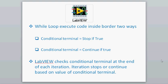This video is about the while loop in LabVIEW. A while loop executes code inside the border. There are two ways: the first is the conditional terminal set to 'stop if true,' and the other is 'continue if true.' You can use either method based on your requirement. LabVIEW checks the conditional terminal at the end of each iteration, and the loop stops or continues based on that value.